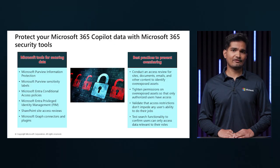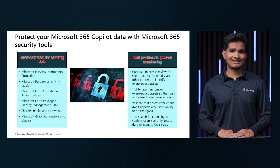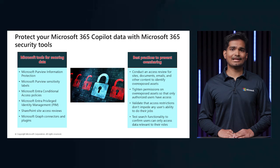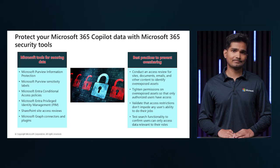To protect your M365 Copilot, some tools to consider for securing your data are: Microsoft Purview Information Protection, MS Purview sensitivity labels to allow the right people to see the right data, MS Entra conditional access policies to verify explicitly, and SharePoint site access reviews to discard old sites as needed, which reduces the risk of breaches. Some best practices to prevent oversharing: conduct access reviews for sites, documents, and emails to see if there are any overexposed assets; validate that access restrictions don't impede a user's ability to do their job; and test the search functionality to see that there are no access gaps.